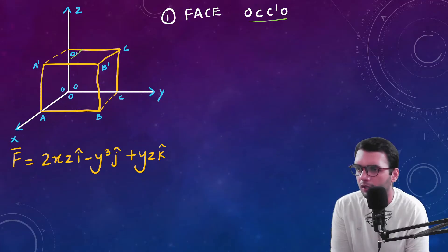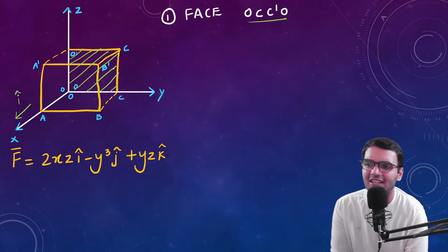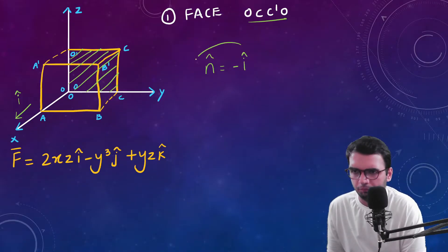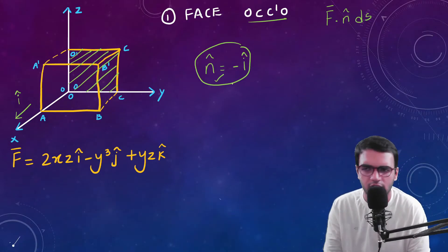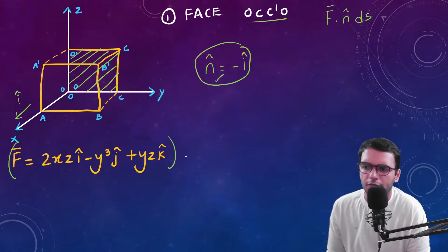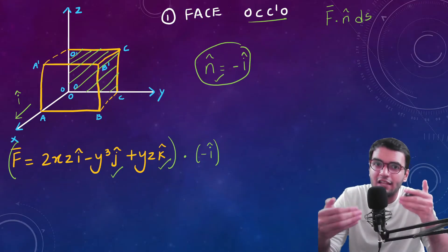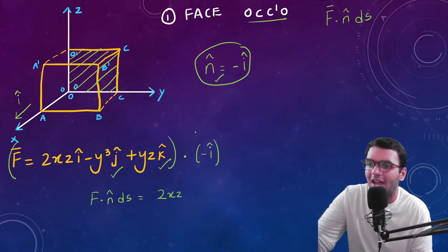Let us first consider the back side of the cube. Looking at this face, the normal vector is in the minus i-cap direction. So for this face, n-cap equals minus i-cap. Taking the dot product of F with n-cap, the j and k components vanish since i dot i equals 1, leaving us with F dot n-cap dS equals 2xz.